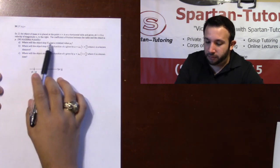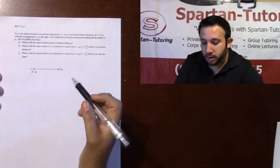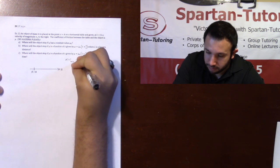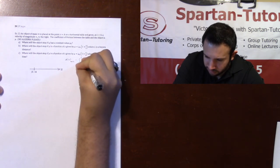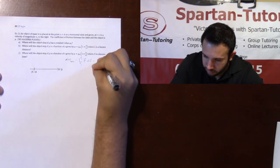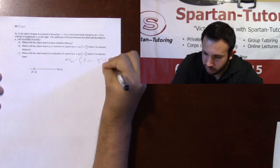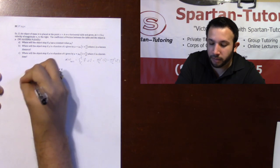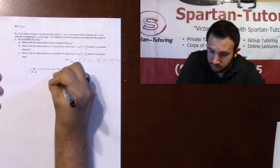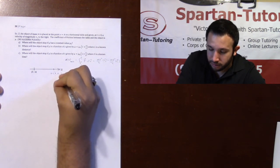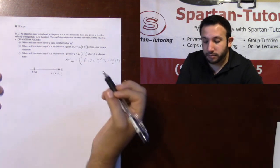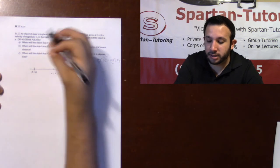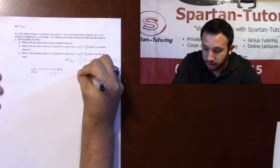In part a, where will the object stop if mu has a constant value of mu naught? First I need to do my net work: the integral from r1 to r2 of F dotted with dr equals mv² over 2 at r2 minus mv² over 2 at r1. We're going to call r1 our x equals a, and then at some x equals x is what we're solving for. Because the object comes to a stop, we know the final velocity is zero and the initial velocity was v1, so this will be negative mv1² over 2.